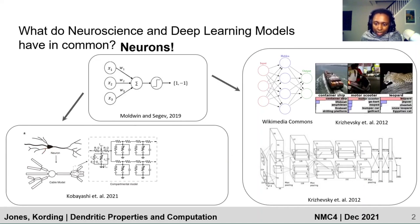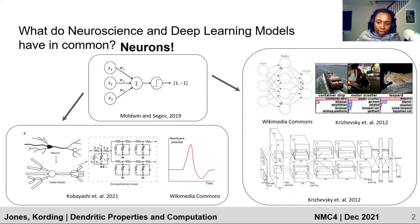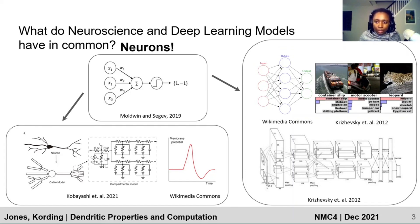The aim in deep learning is to perform complex tasks at or above human levels, whereas in neuron modeling and neuroscience, the aim is to fit empirical recordings to produce descriptions of neurons that predict neuronal phenomena. These similarities and differences are sources of tension as we try to build a bridge between these two fields.